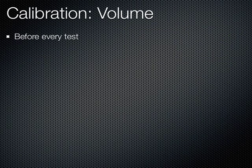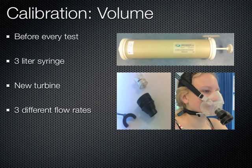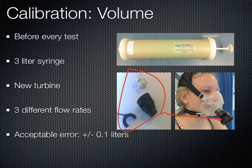We also calibrate flow volume before each test using a 3-liter syringe and a new turbine. The syringes are externally calibrated to ensure that they represent 3 liters of air. We put air through the syringe at three different flow rates: slow at 0.5 liters per second, then 1 liter per second, and finally at 3 liters per second. This shows the flow rate volume over a range of minute ventilations to mirror the different breaths the patient takes over the course of the test. The syringe must be pumped three successful times for the measurement to be taken. We then check that the values are within a 0.1 range of error and transfer the measurements to the calibration log.